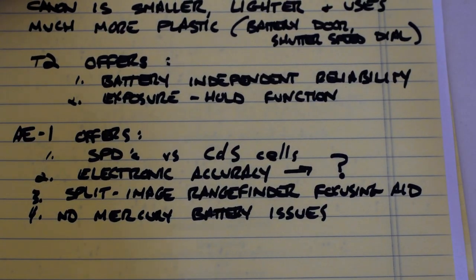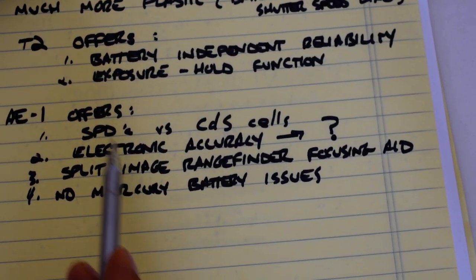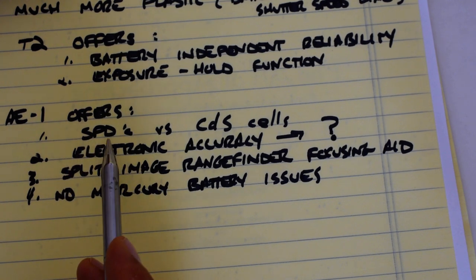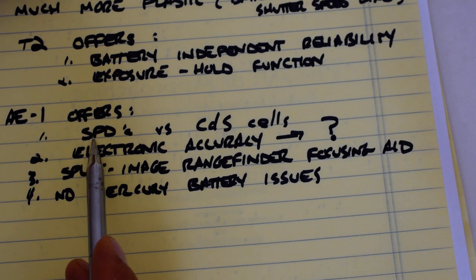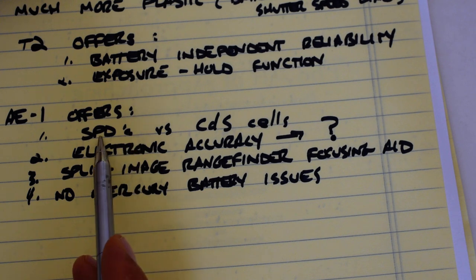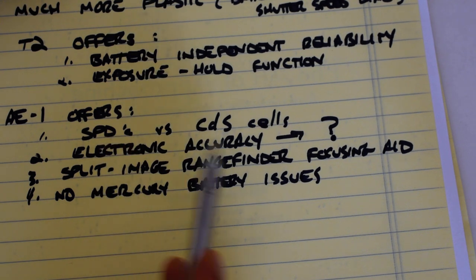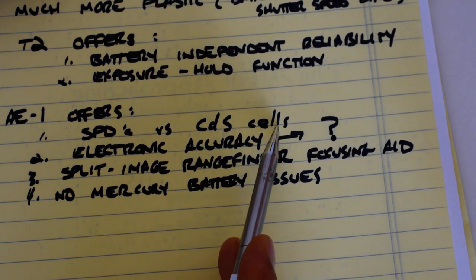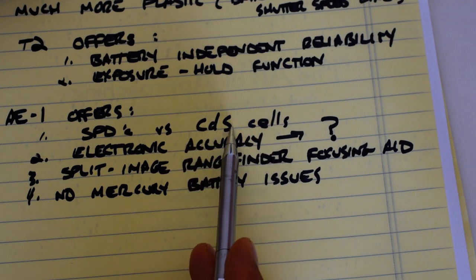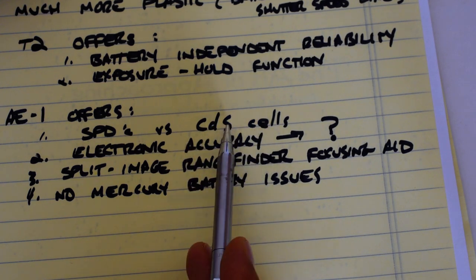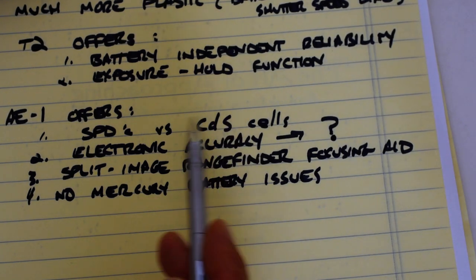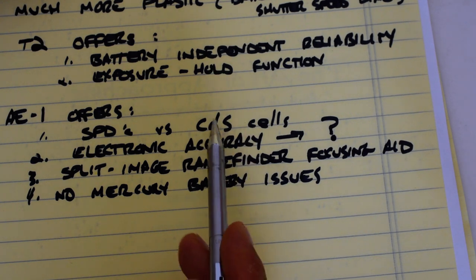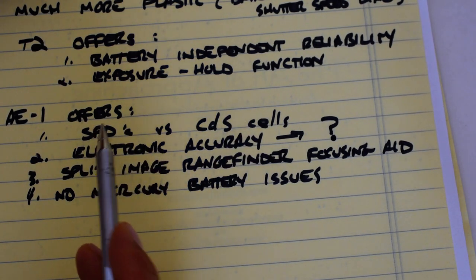The AE-1 however offers SPDs versus CDS cells. That is, the AE-1 uses silicon photodiodes which are much more reliable and it's a superior technology versus the old cadmium sulfide photocells which tend to lag a bit in terms of responsiveness. They can be thrown off by really bright light. They need to recover. It takes a few seconds or a few moments to recover from an extremely bright light source with CDS cells, whereas the SPDs, the silicon cells, are much more responsive and generally have held up better over time.